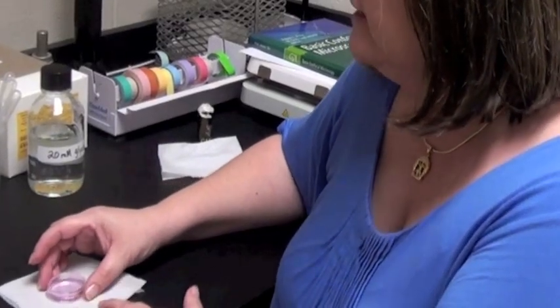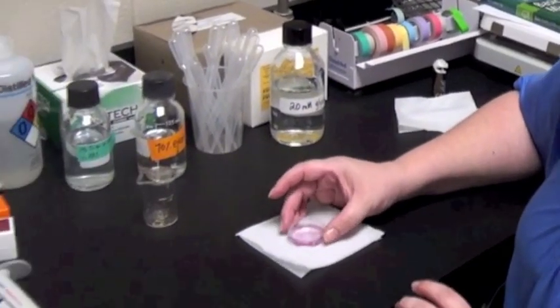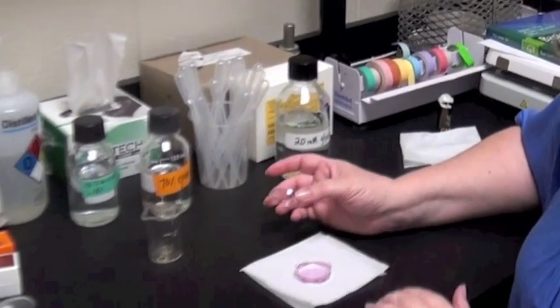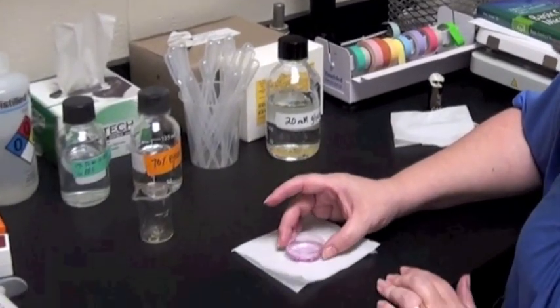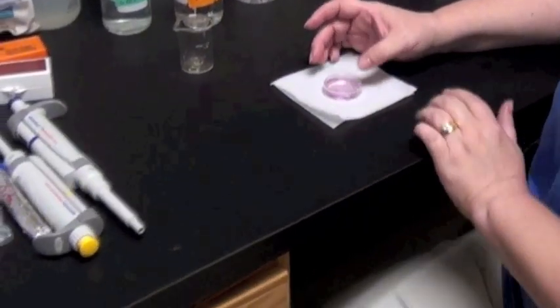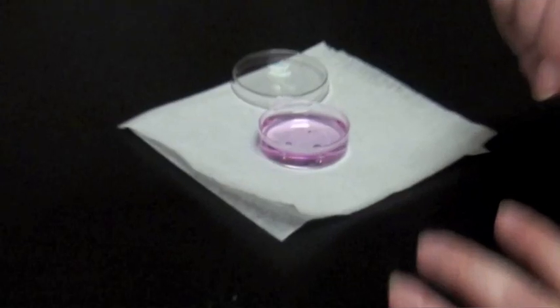One traditional way that you would have your cover slip mounted is with cells on it and you'd have media in your flask. The main thing that you need to understand when you're talking about fixation is the consequence of the fixation on your specimen and what that's going to mean when you start to do microscopy.